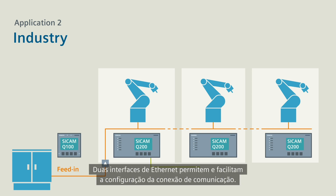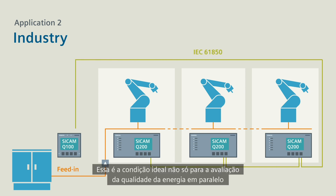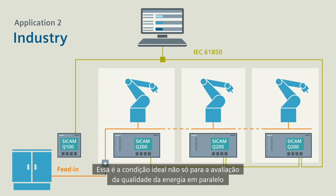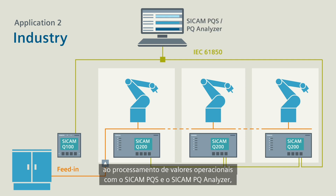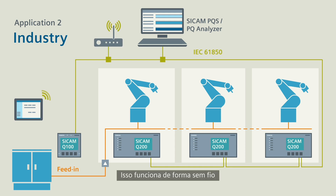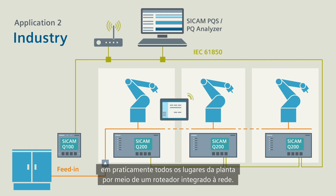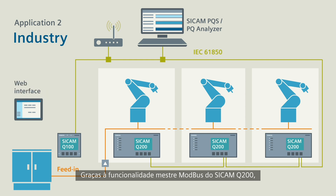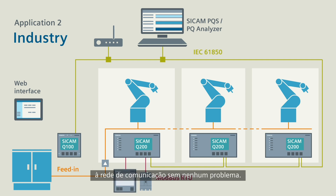Two Ethernet interfaces enable easy configuration of the communication connection — the ideal condition for parallel power quality evaluation and processing of operating values with CCAM PQS and CCAM PQ Analyzer, but also for easy access to data via the web interface. This functions wirelessly from virtually any location in the plant through a router integrated in the network. Thanks to the Modbus master functionality of CCAM Q200, you integrate serial RS-485 devices in the communication network without a problem.